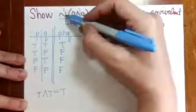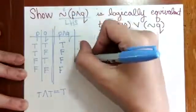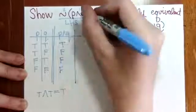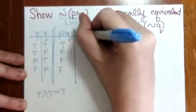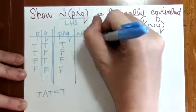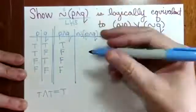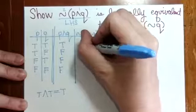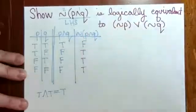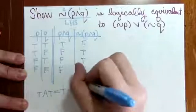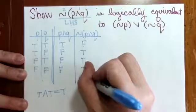And then we'll negate the results of the AND column. So negating the previous column yields F T T T. And this column is our left-hand side.